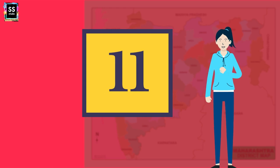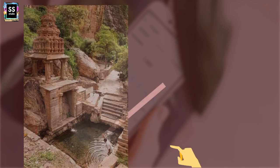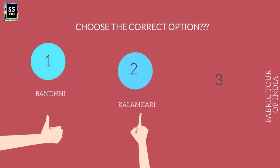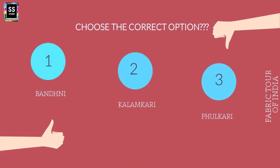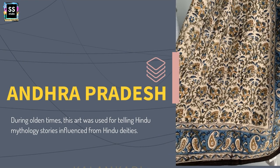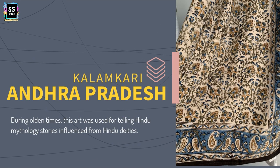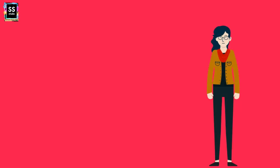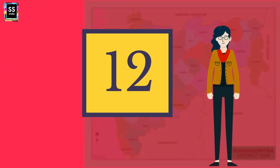State 11: Which is the famous textile of Andhra Pradesh? You can see the scenic beauty of Andhra Pradesh. The options are: Is it Bandhani? Is it Kalamkari? Or is it Phulkari? It is Kalamkari. During olden times, Kalamkari art was used for telling Hindu mythology stories, influenced by Hindu deities. Nowadays the fabric is used as block print in most Indian attires.